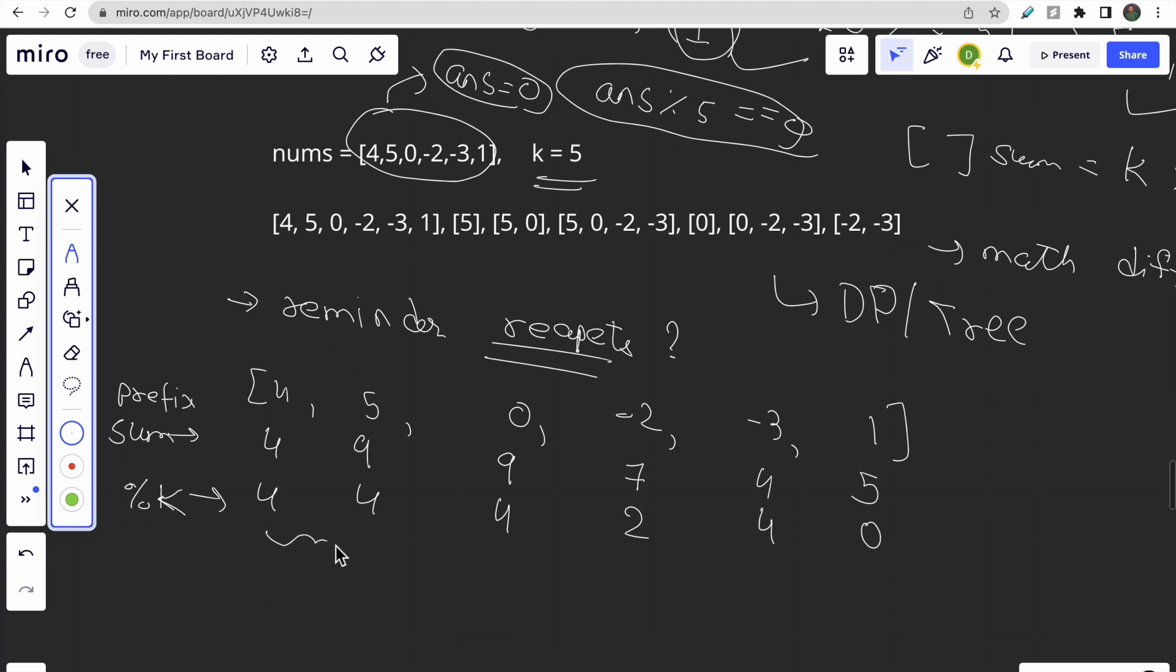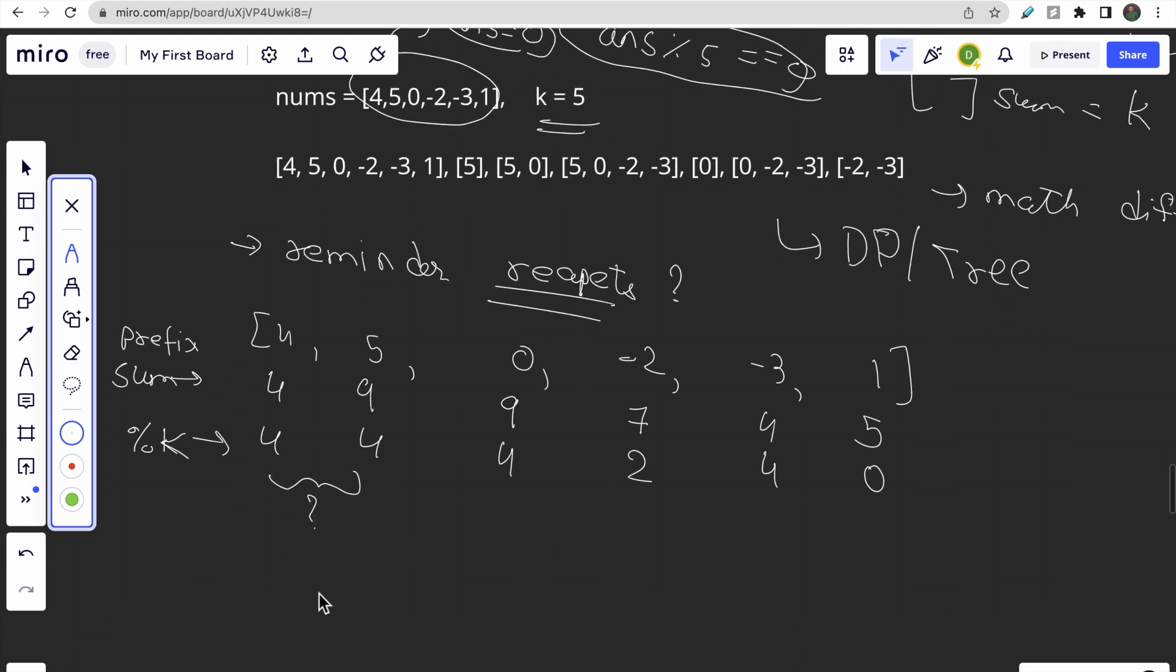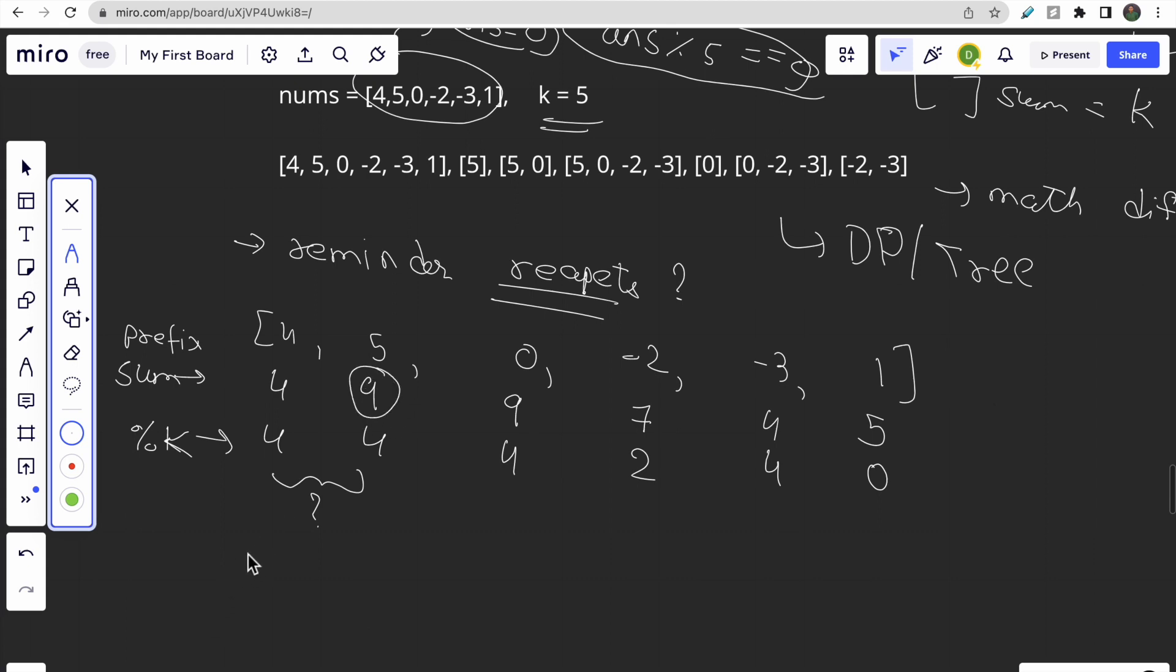So what does this indicate? This indicates that, what this 9 is, what is this 9? This is sum of 0 to 1. So whenever the remainder repeats, it says that between 0 to 1, if we neglect some of the elements, then we will get a subarray whose modulus k is equal to 0. That means here, if we minus sum of 0, then that will give us 5 and 5 modulus k is 0. So that is one of our valid subarray. So this is what this indicates.